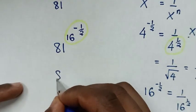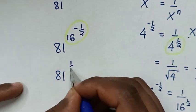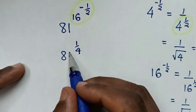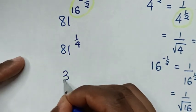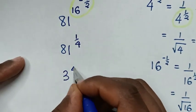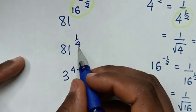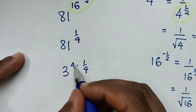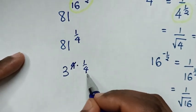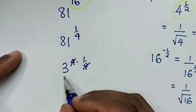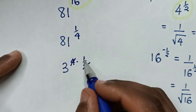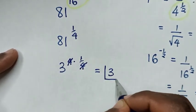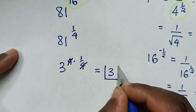Then it will be 81 power of 1 over 4. Then 81 is the same as 3 power of 4. Then we'll multiply by the power of 1 over 4. To simplify, 4 will cancel with this 4. So it will be 3 power of 1, which is equal to 3. Therefore, this is our final answer.